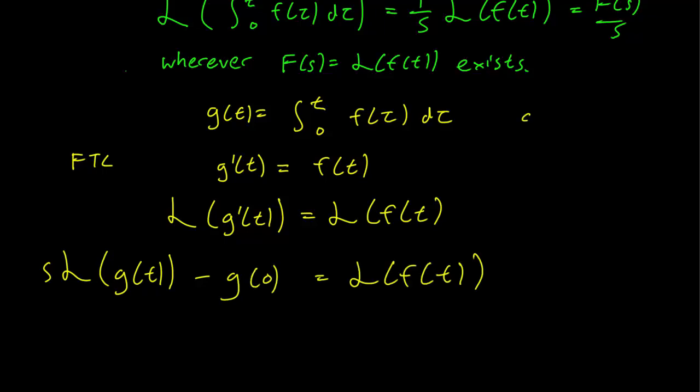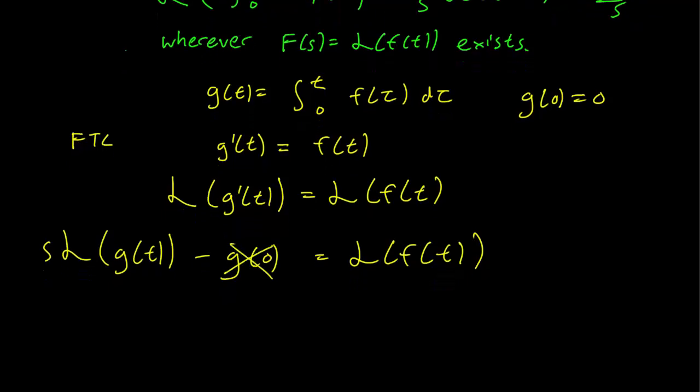But g(0) is clearly 0 because we are just going to be taking the integral from 0 to 0, so this cancels. And we are left with Laplace transform of g equals Laplace transform of f over s.